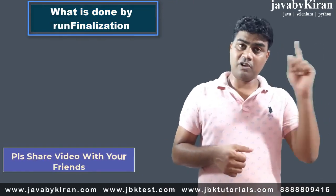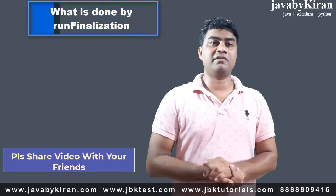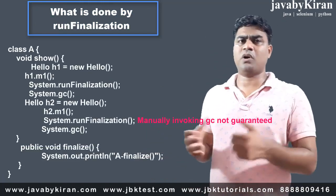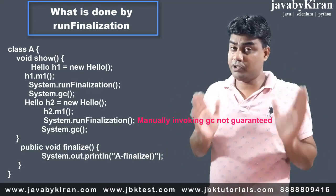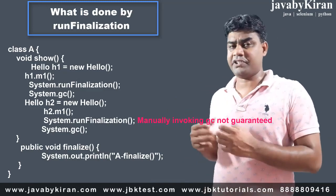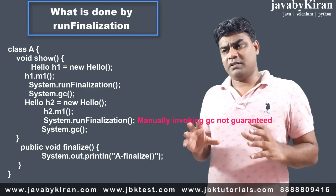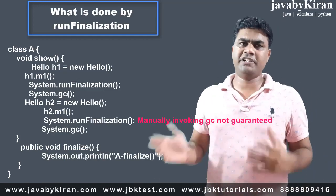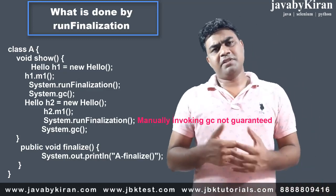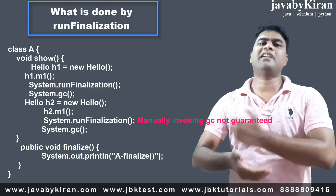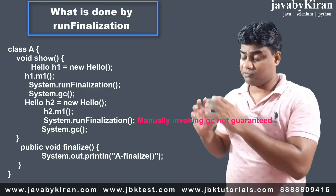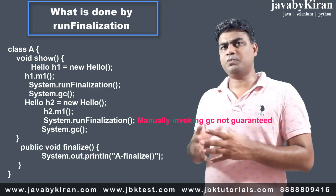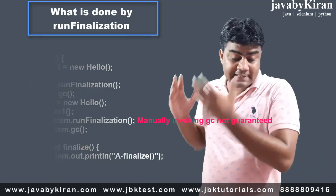Now what does the runFinalization method do? It calls the finalize() method. If you don't override it, the Object class finalize() method will get called. If you override it, your finalize() method will get called. In this example, I have class A. I created two objects and called runFinalization explicitly — though this happens automatically and you don't need to call it in industry development. After calling runFinalization, I called GC. So the finalize() method will get called automatically. I have overridden it. If you look at the output, you will see the finalize method got called.